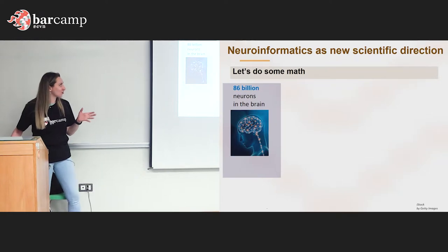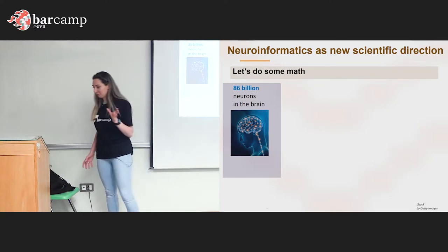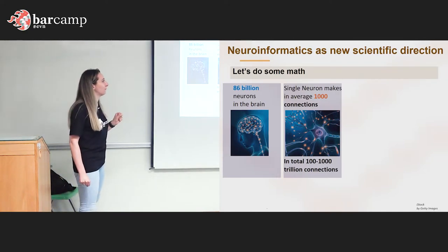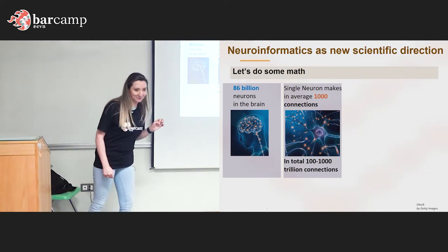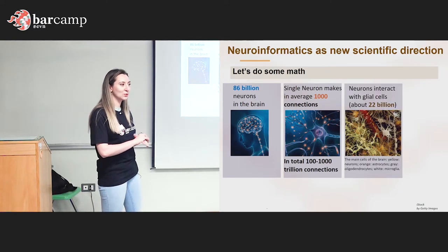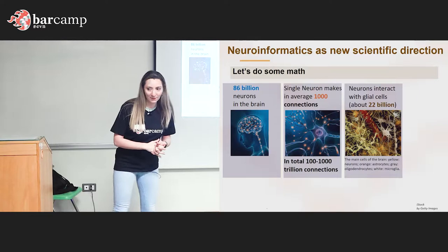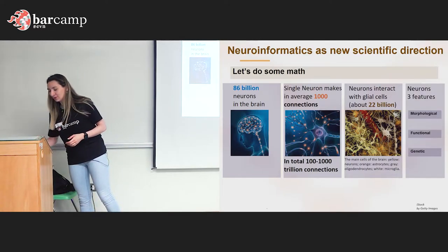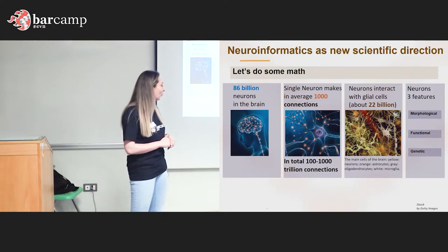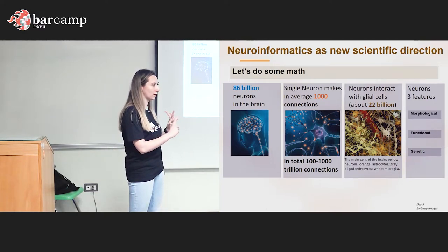Now do some math: we have 86 billion neurons in our brain, and each makes on average 1,000 connections. On top of that, these neurons interact with about 22 billion glia cells. And to understand those interactions, we need to look at three different aspects of each neuron: morphology, function, and genetics.